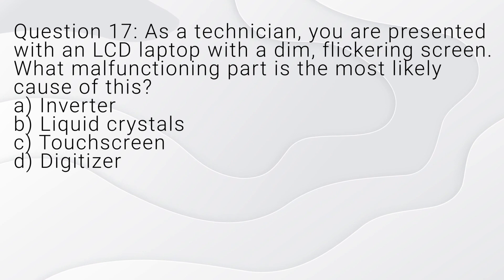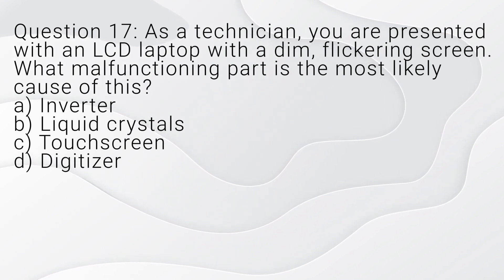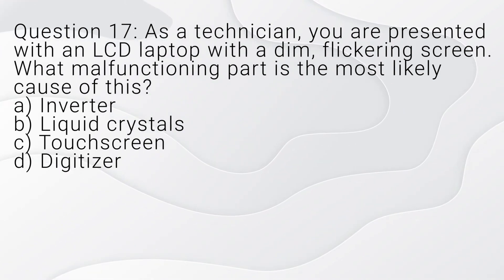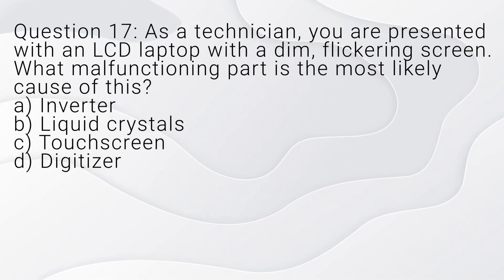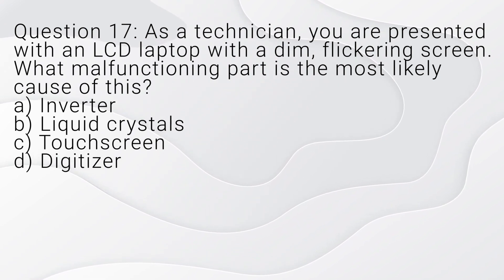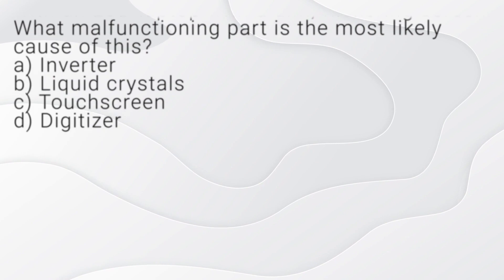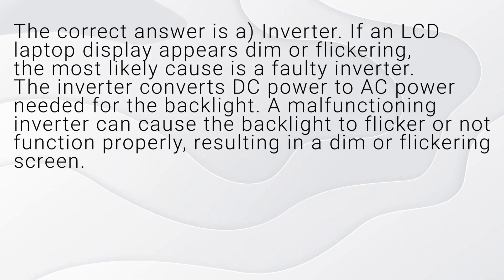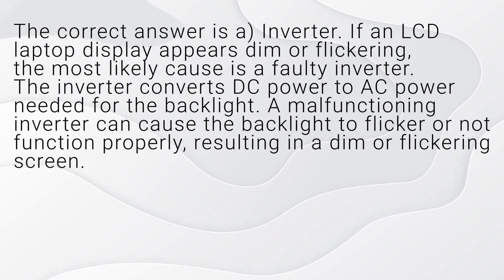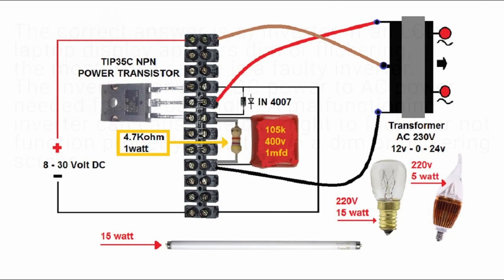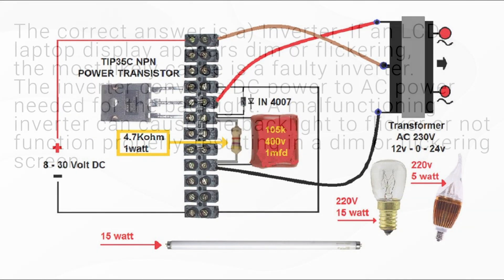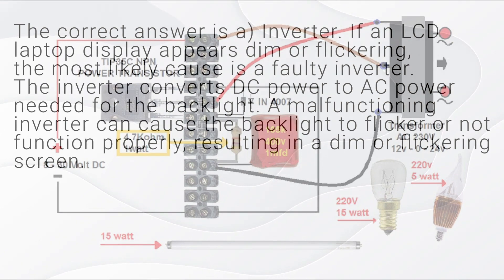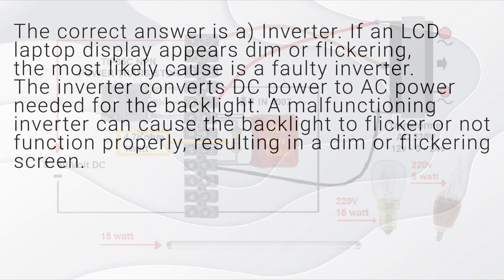Question 17. As a technician, you are presented with an LCD laptop with a dim flickering screen. What malfunctioning part is the most likely cause of this? A. Inverter. B. Liquid crystals. C. Touchscreen. D. Digitizer. The correct answer is A, inverter. If an LCD laptop display appears dim or flickering, the most likely cause is a faulty inverter. The inverter converts DC power to AC power needed for the backlight. A malfunctioning inverter can cause the backlight to flicker or not function properly, resulting in a dim or flickering screen.